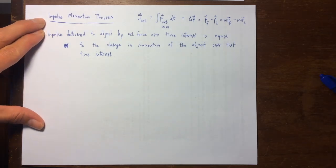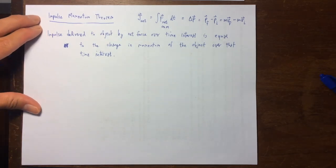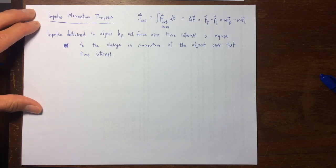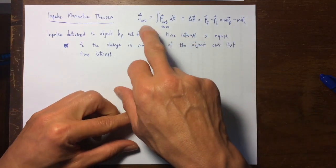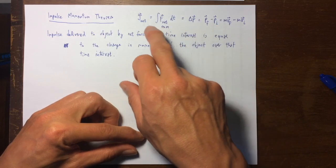So I just wrote down some summarizing comments about the impulse momentum theorem. This is roughly a summary of how the math went.